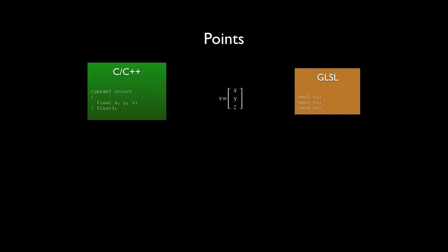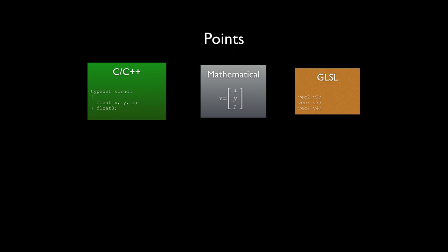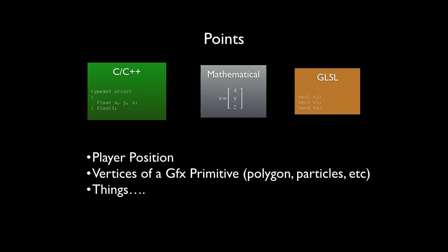Points have a mathematical definition shown in the slide. In C and C++ they're commonly just XYZ in a struct, and in GLSL they have built-in types to represent 2D, 3D, and 4D. The most common one I want to focus on is vec3, which is a 3D XYZ point in GLSL. Points help you represent things like the player's position, the vertices of a graphics primitive such as a polygon, or particles — anything you're drawing in your game. Positions and vertices are really the primary uses for points.